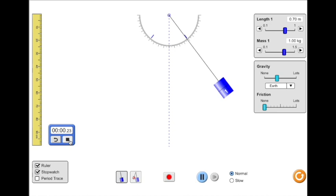Use the Length 1 slider to change the length of the pendulum and the Mass 1 slider to change the mass of the pendulum bob.